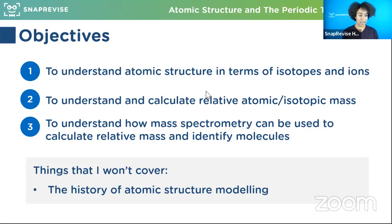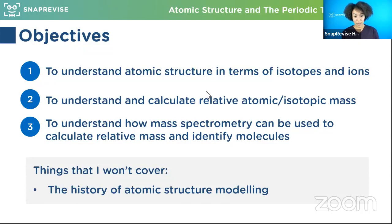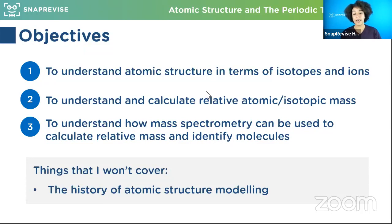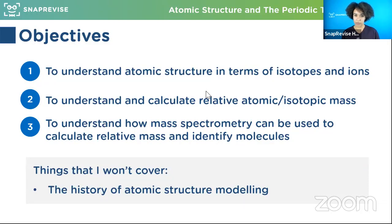On to objectives. Today we're going to try to understand atomic structure, think about how isotopes are involved with that, and do some calculations for relative atomic and isotopic mass. This is a little bit confusing because I know a lot of exam boards use them interchangeably, so I'll talk about those distinctions in a bit.